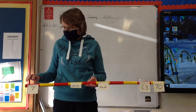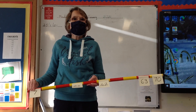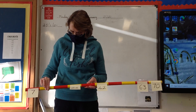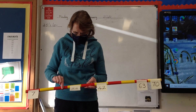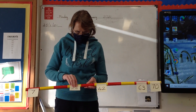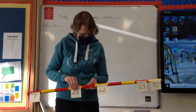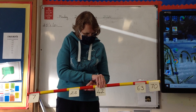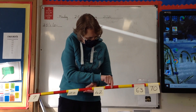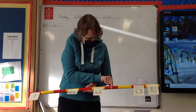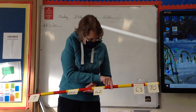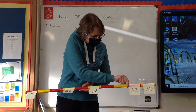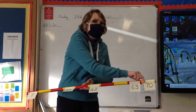Okay, what about if that was 70, not 7 — what would it be then? 70, 140, 210, 280, 350, 420, 490, 560, 630, 700.